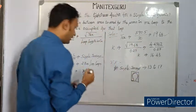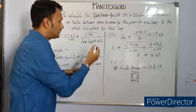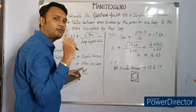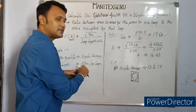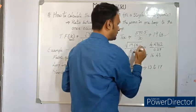4.4362 divided by 0.27. Actually we know the loop length for 100 loops, but to calculate the tightness factor we need loop length of a single particular loop. 27 divided by 100 is 0.27. So square root of 19.68 is 4.4362 divided by 0.27.